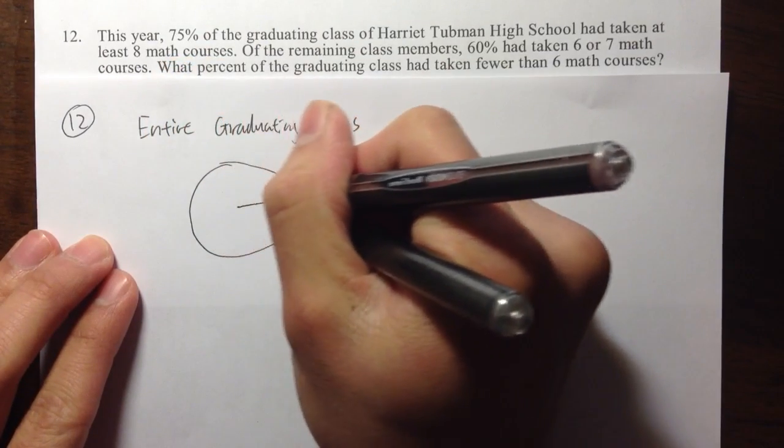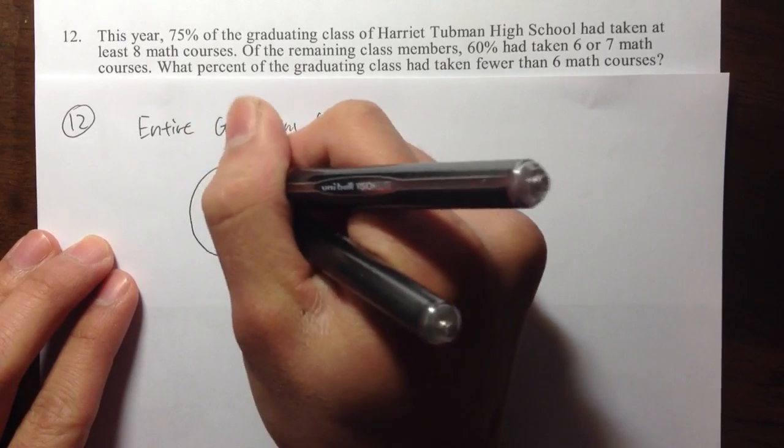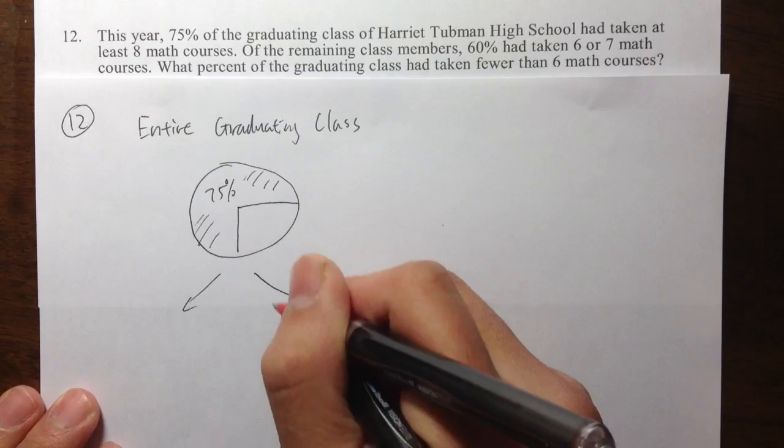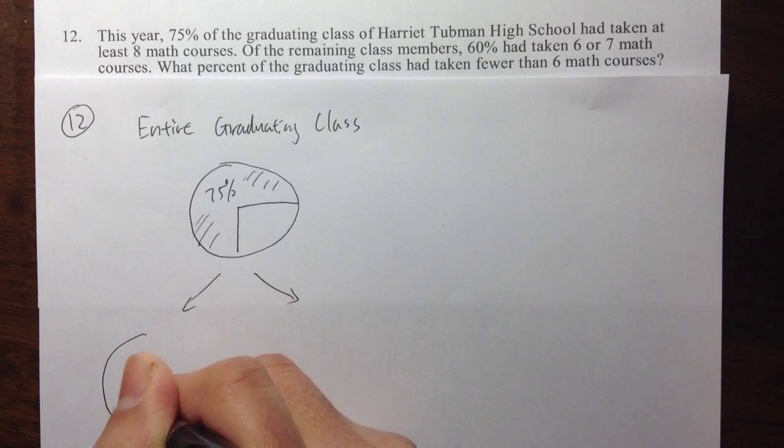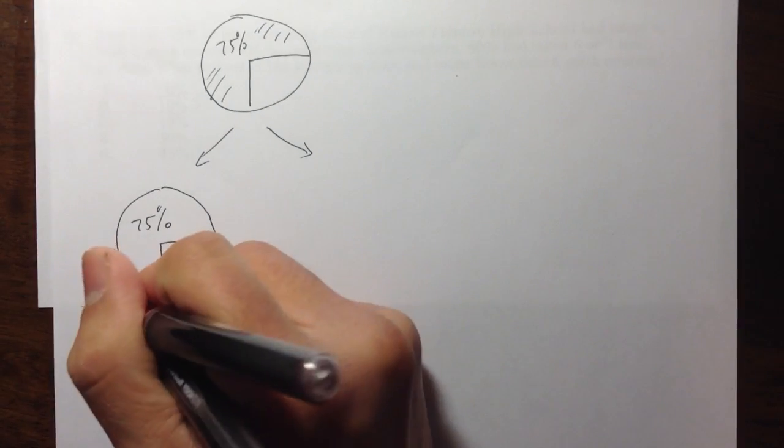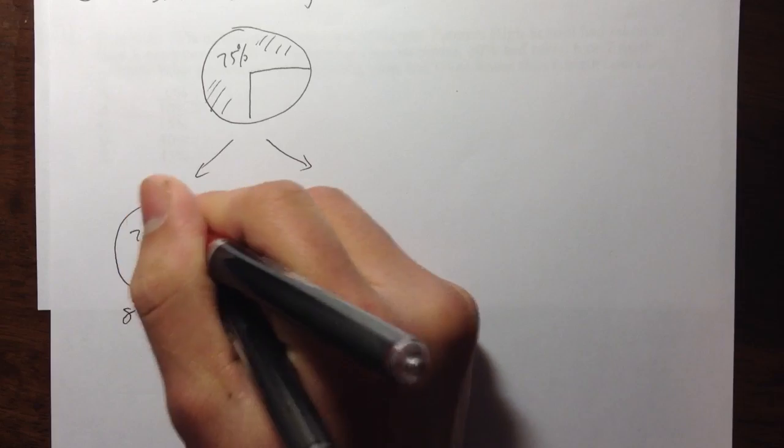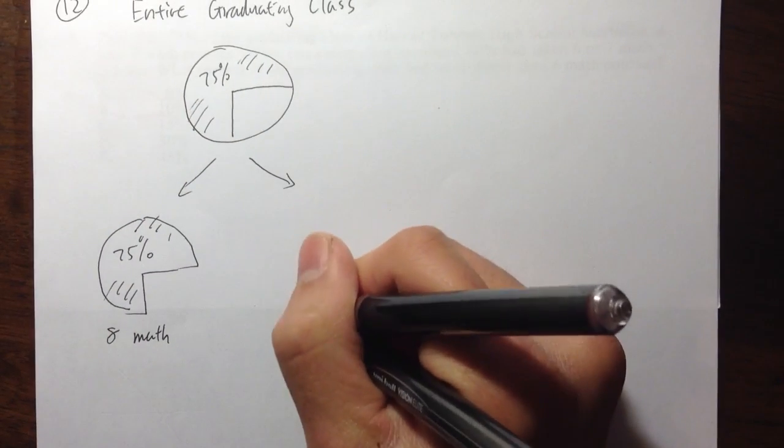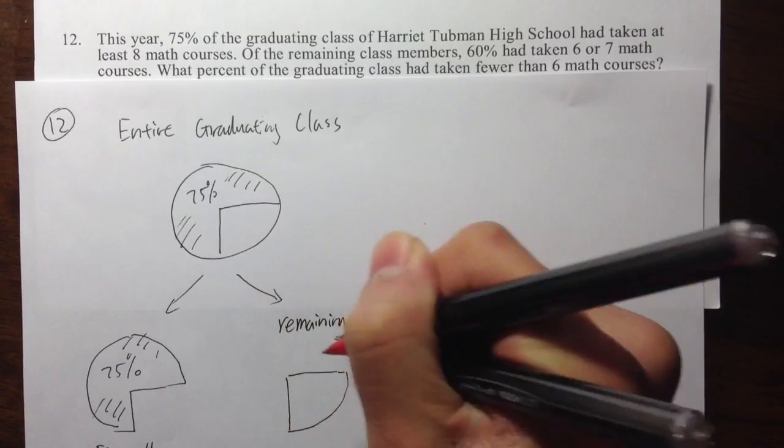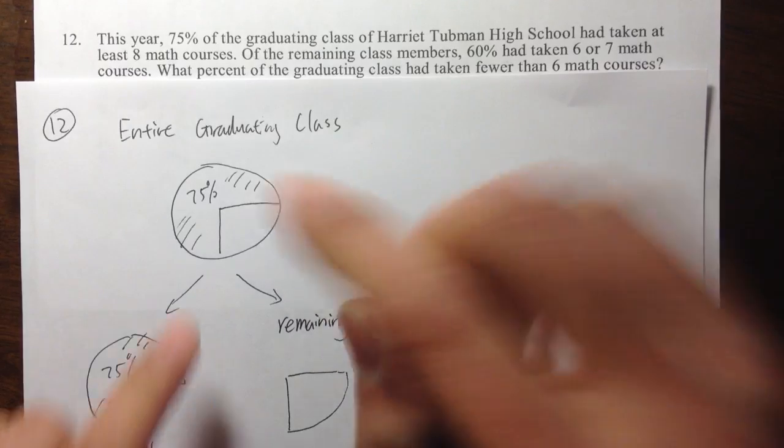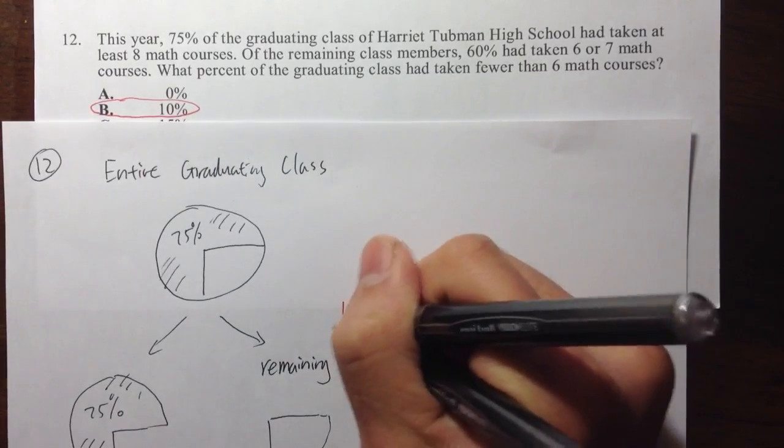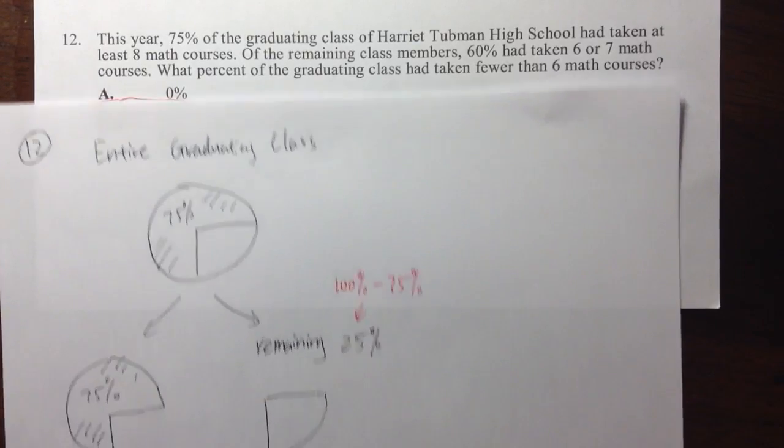It says that 75% of the graduating class had taken at least eight math courses. So this divides us into 75%. Let's say this is the 75%. And what do they have right here? 75% of the students, they took at least eight math courses. And then right here, this will be the remaining portion. If this is 75%, the whole thing adds up to 100%, so you must have 25% right here. So the remaining is only 25%. This is 100% minus 75%, which is 25%.